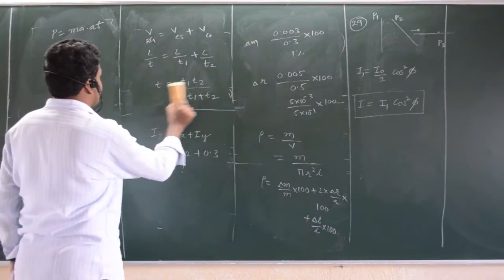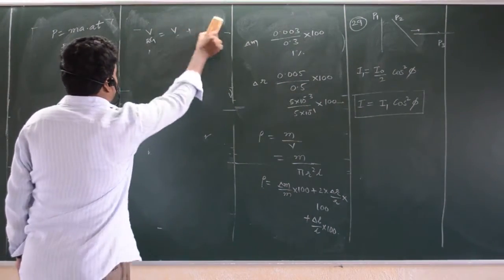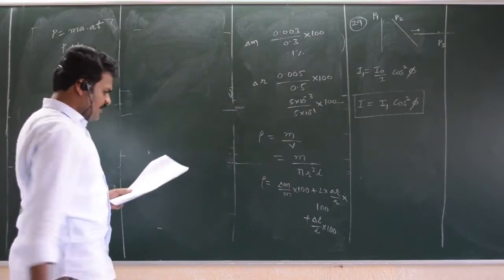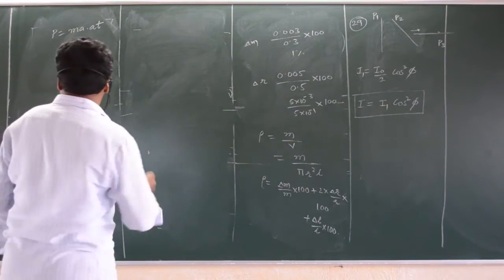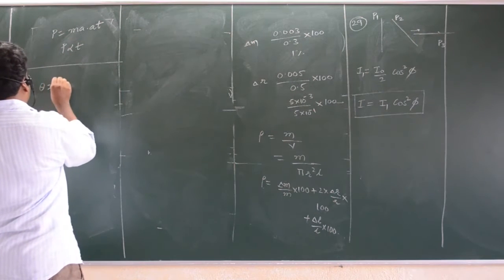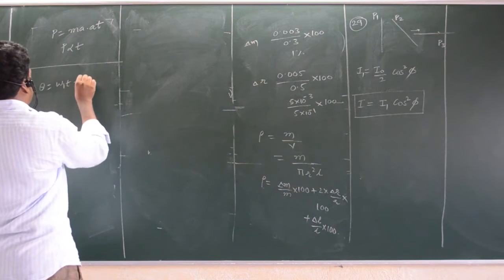Question number 49: wheel is starting from rest, means omega 1 is equal to 0. It's asking theta. Theta is equal to... uniformly alpha is given, theta is asking. Theta is equal to omega 1 t plus half alpha t square.